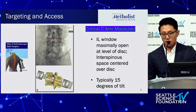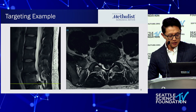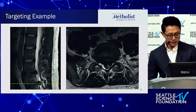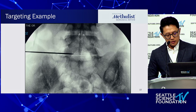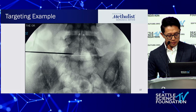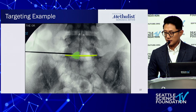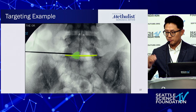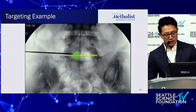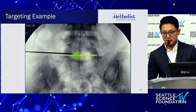Typically that means caudally tilting the C-arm about 15 degrees. Here's a targeting example — a large left paracentral herniated disc. You can see I've already caudally tilted the window quite a bit with the C-arm. There's the disc, there's the interlaminar window, and I've positioned that directly in the middle of the disc.